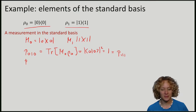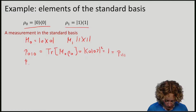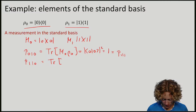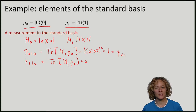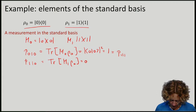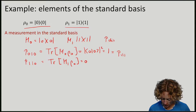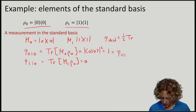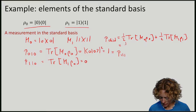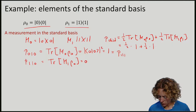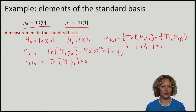You should convince yourself that the probability to get measurement outcome 0 if the state was actually ρ₁ is 0. So the probability to distinguish these two states, P_distinguish, is one-half times trace of M₀ with ρ₀ plus one-half times trace of M₀ with ρ₁, which equals one-half times 1 plus one-half times 1, giving 1. So I can perfectly distinguish these two states.